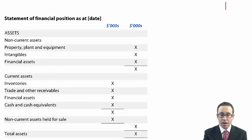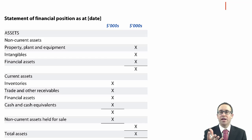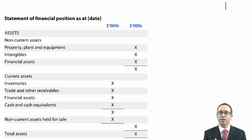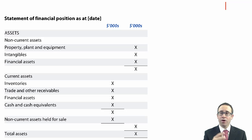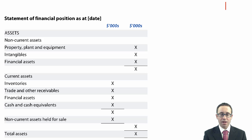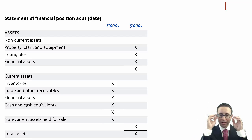Moving on, let's look at the statement of financial position. It's not a group statement of financial position as such — your group SFP will contain other aspects such as goodwill and non-controlling interests. We're just going to look at an individual company one and then expand upon that as we look into the group accounts. Remember you've got the assets at the top and equity and liabilities at the bottom — learn the pro forma.